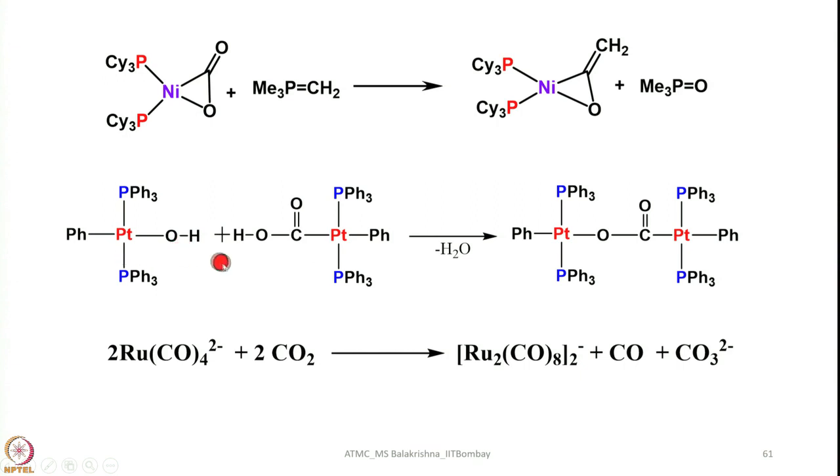For example here one we have hydroxyl group, in another one we have carboxylic group here. If you take these two, elimination of water takes place. Here elimination of water condensation takes place to have a bridging CO2, that means we came across few examples of coordination modes I showed you here. You can get an example for all type of coordination modes if you look into textbooks especially 6th edition of Advanced Inorganic Chemistry by Cotton and others. You take this anionic homoleptic tetracarbonyl ruthenium complex and treat with carbon dioxide you can generate something like this and then CO and CO3 2- comes out. That means here it acts as a source of carbon monoxide here.